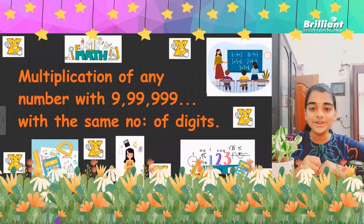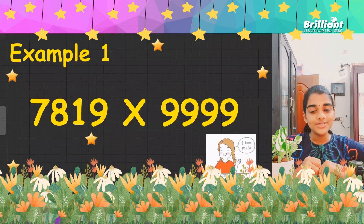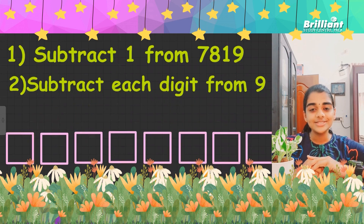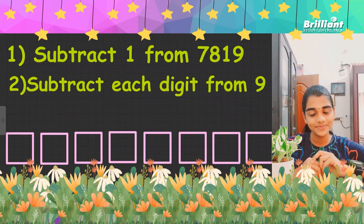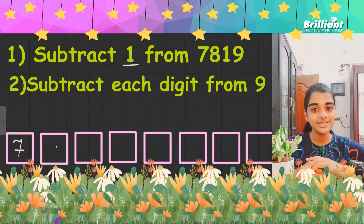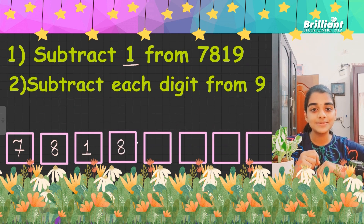Our first example is 9,999 times 7,819. Both are four-digit numbers. There are just two simple steps to solve this. The first step is to subtract 1 from 7,819, which we all know is 7,818. Now, the second step is to subtract each digit from 9.